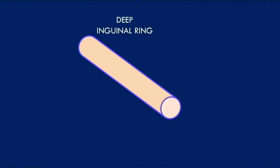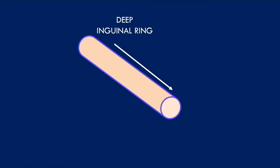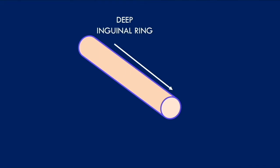Here is a schematic representation of the spermatic cord. The spermatic cord originates from the deep inguinal ring. It then passes through the inguinal canal and exits at the superficial inguinal ring. Once it exits the superficial inguinal ring, it enters the scrotum and terminates at the posterior border of the testes.